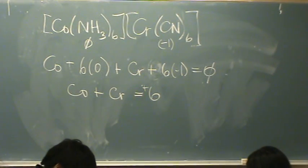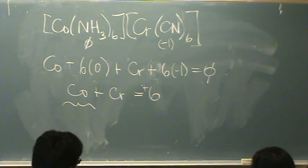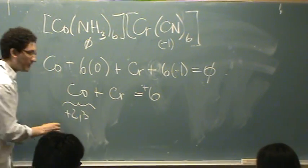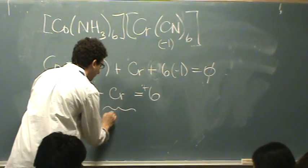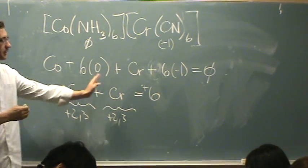Kind of two unknowns of one equation. The only thing you have to help you is your chem2a knowledge, which tells you that this is commonly 2 and 3, and this is commonly 2 and 3. So the only way you can get the correct answer is both are 3.